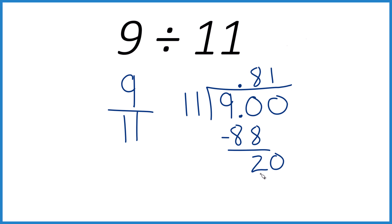1 times 11, that's 11. We subtract, we get 9. So we need to move over 1, bring our 0 down,